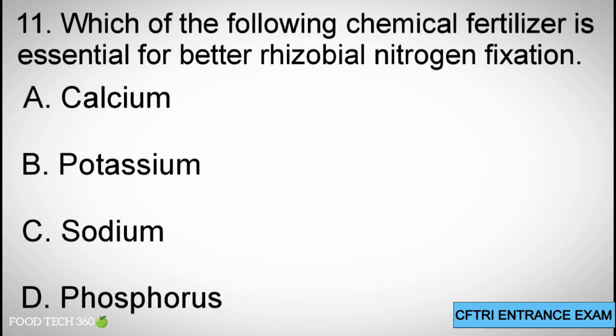Question 11: Which of the following chemical fertilizer is essential for better rhizobial nitrogen fixation? A. Calcium, B. Potassium, C. Sodium, D. Phosphorus. Correct answer: D. Phosphorus.